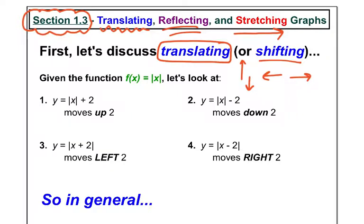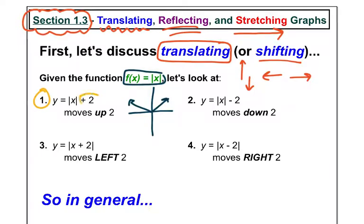We're going to start with just a typical absolute value graph — that is our typical V-graph. For number one, notice that I take y equals absolute value of x and I add two on the outside of the function. Number two looks like subtracted two on the outside. Number three, I added two but on the inside with the x. And on number four, I subtracted two from the x on the inside. So it really makes a difference whether it happens on the inside or outside.